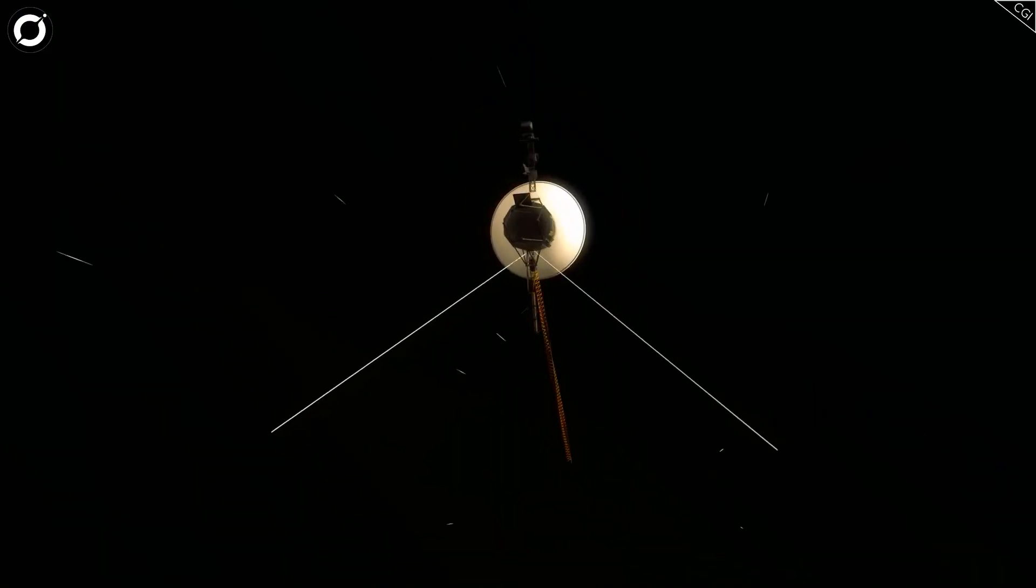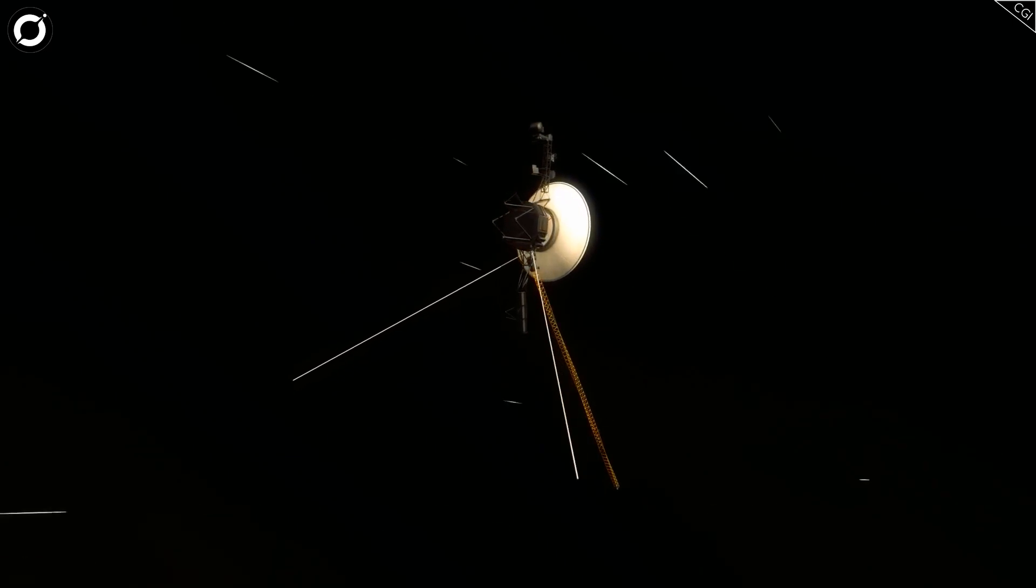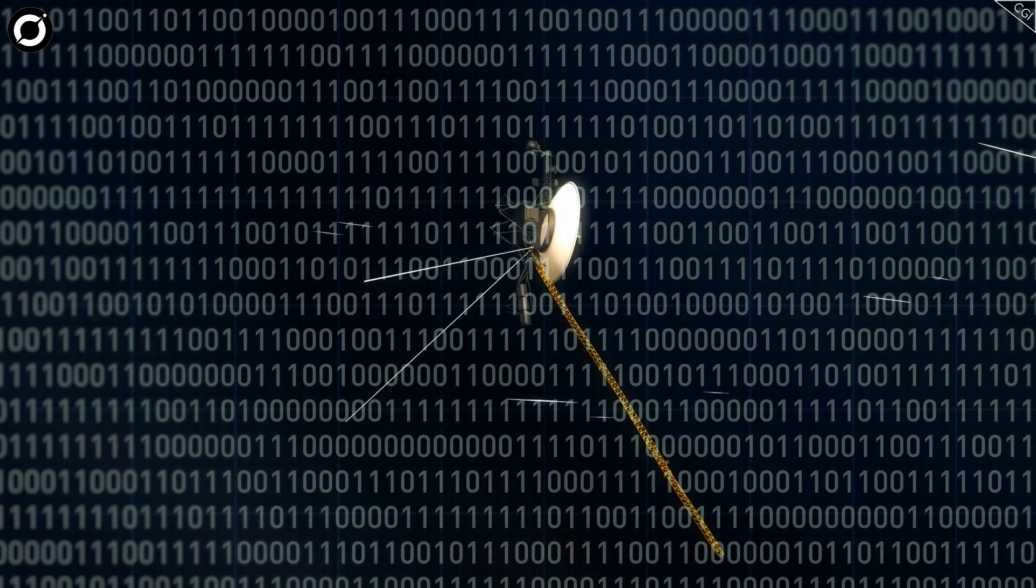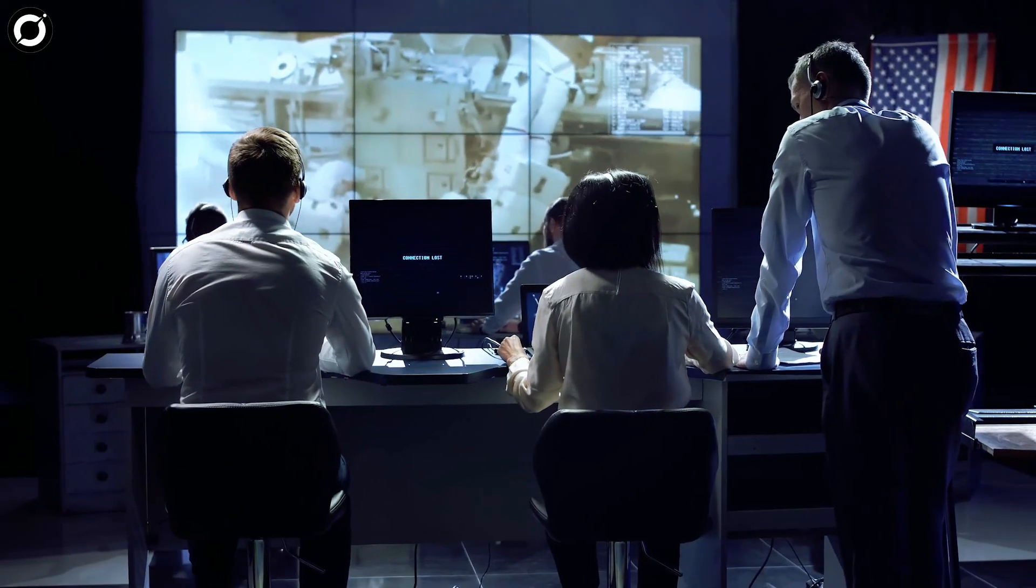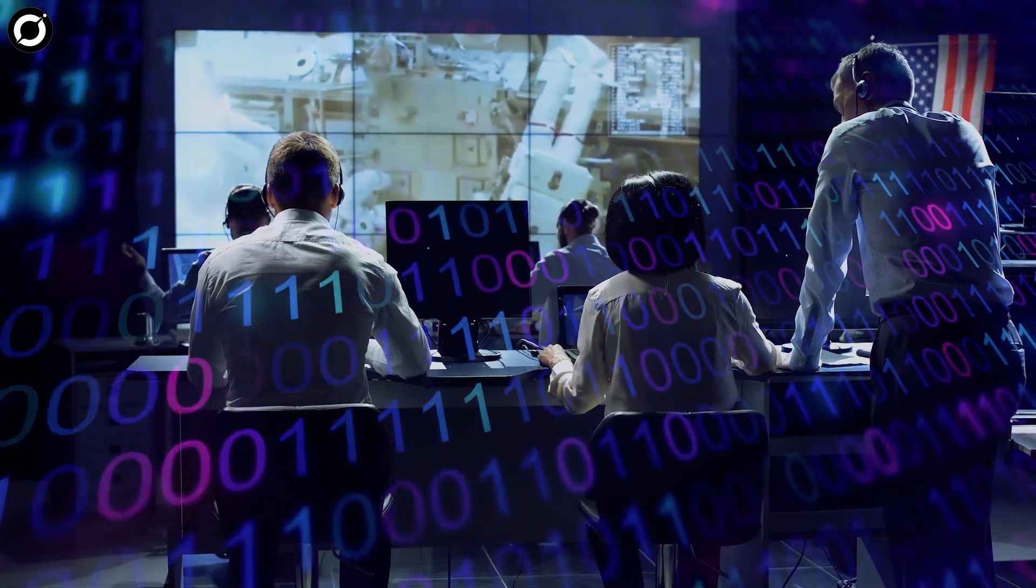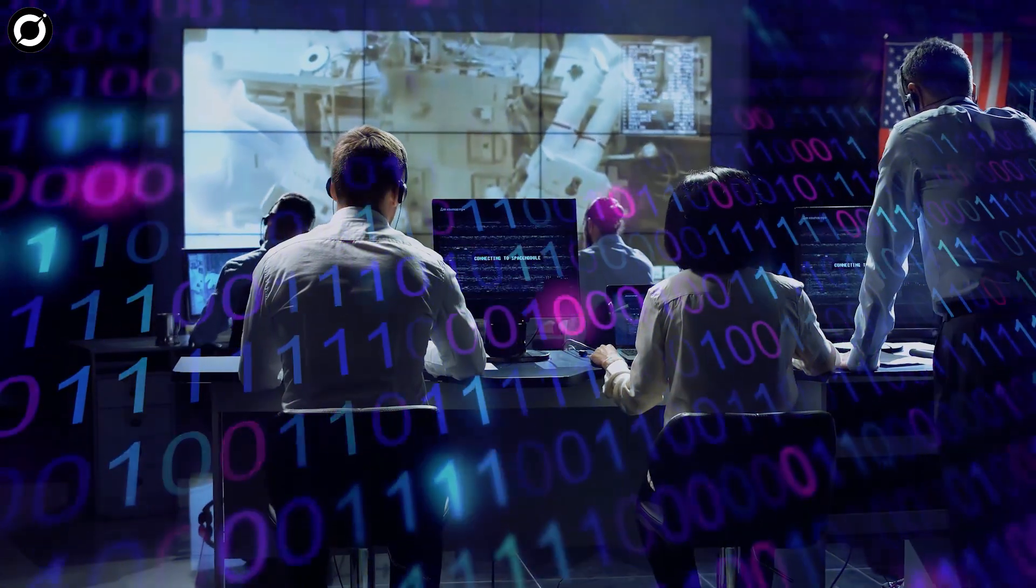The data compiled by Voyager 1 is in the form of ones and zeros, or binary code. However, recently, the TMU began transmitting repetitive patterns of ones and zeros. This glitch is making it difficult for even the scientists to decipher the strange code being received.